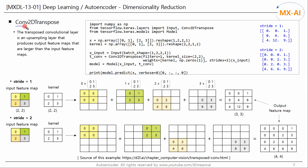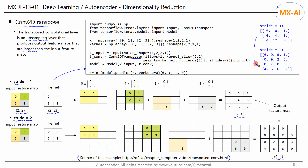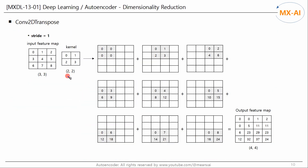Before implementing this model in code, let's briefly review the 2D transposed convolution process. The transposed convolutional layer is an upsampling layer that produces output feature maps larger than the input feature maps. Applying a transposed convolution with a 2 by 2 kernel and stride 1 to a 2 by 2 input feature map produces a 3 by 3 feature map. If the stride is 2, a 4 by 4 feature map is generated. Applying a transposed convolution with a 2 by 2 kernel and stride 1 to a 3 by 3 input feature map produces a 4 by 4 feature map.